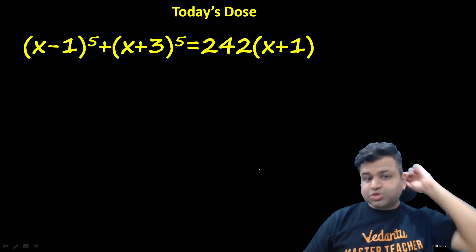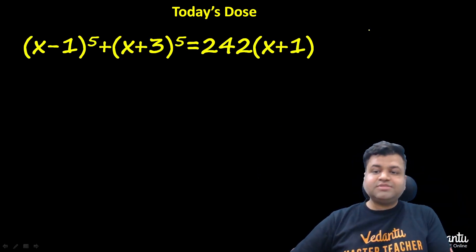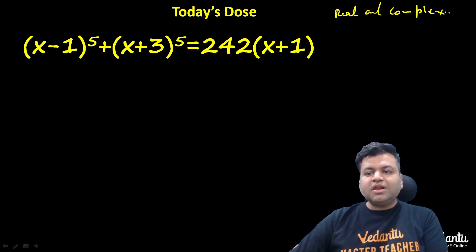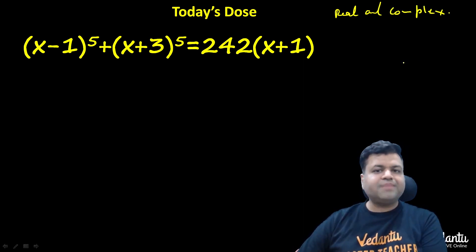This is the question: (x minus 1) raised to the power 5 plus (x plus 3) raised to the power 5 equals 242 times (x plus 1). And we need to find all the real and complex solutions. That means we need to find all the 5 solutions.